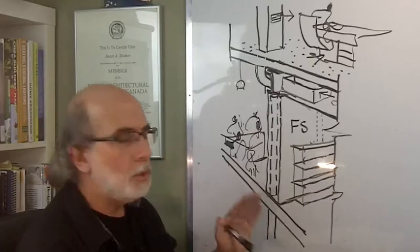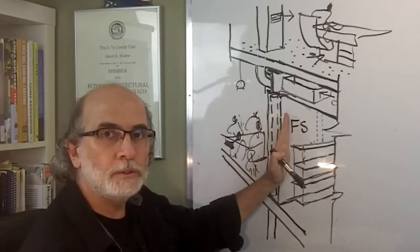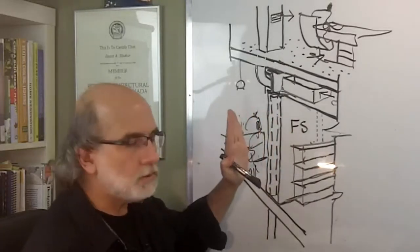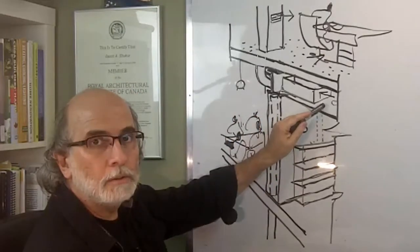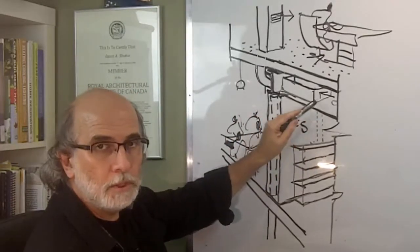Now, we have two scenarios here. We have a fire separation that does have a fire resistant rating where there is a mechanical HVAC air duct coming from this zone or compartment